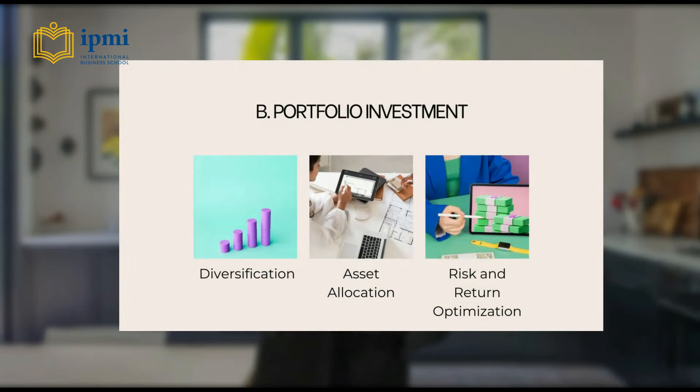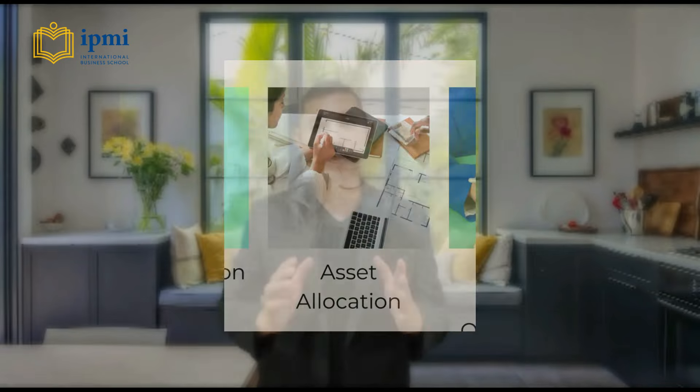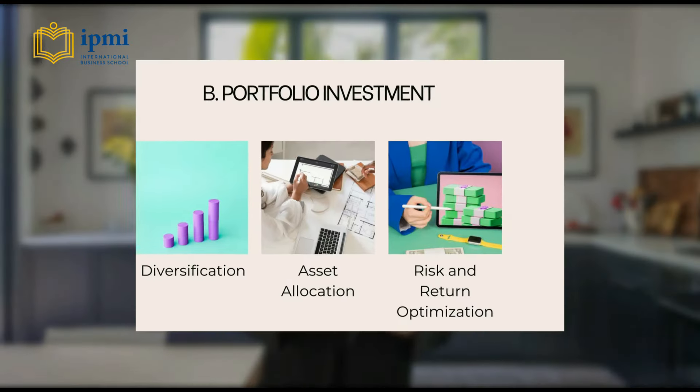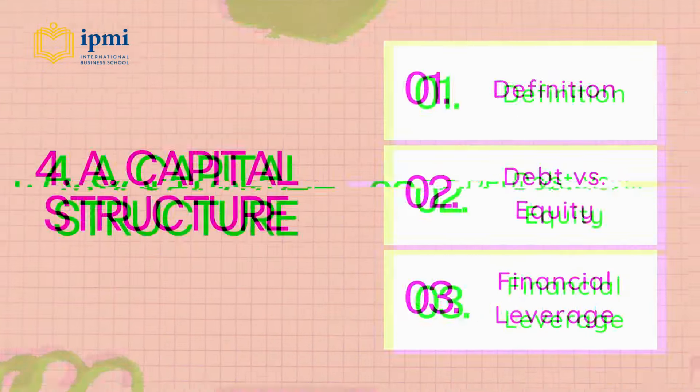Portfolio investment involves constructing a mix of different securities to achieve diversification. Asset allocation refers to deciding on the proportion of the portfolio allocated to different asset classes like stocks, bonds, and cash. Investors seek to optimize the trade-off between risk and return.